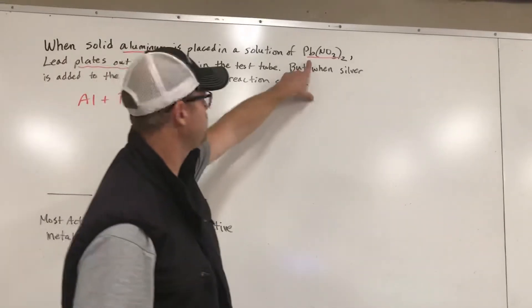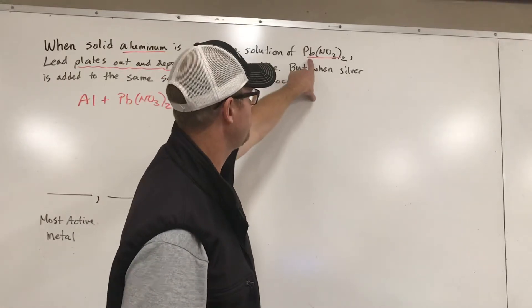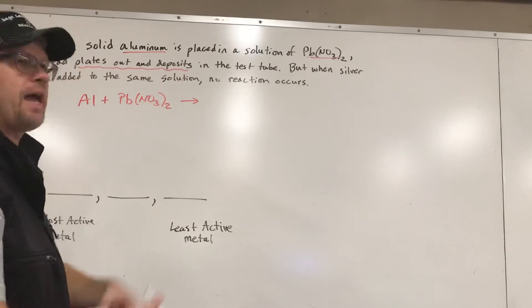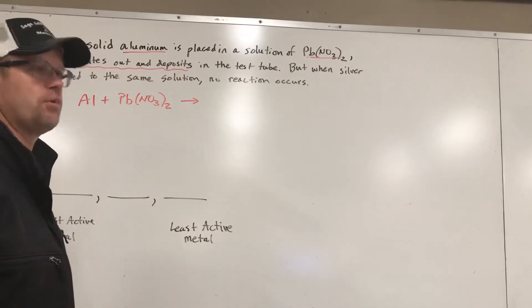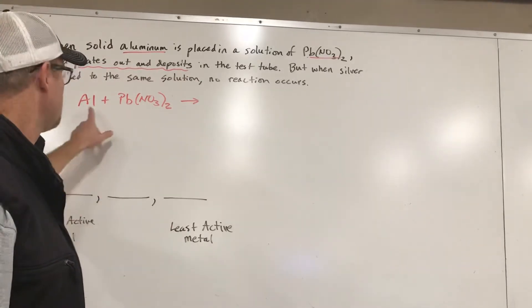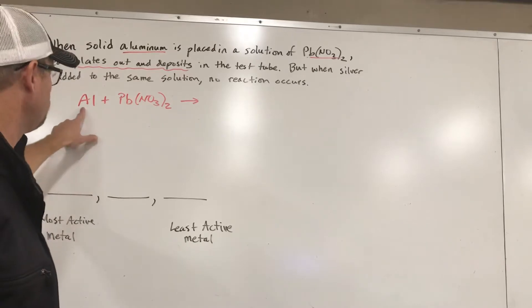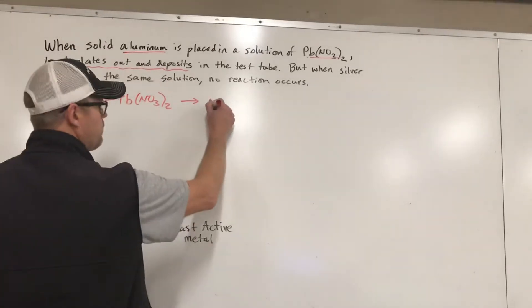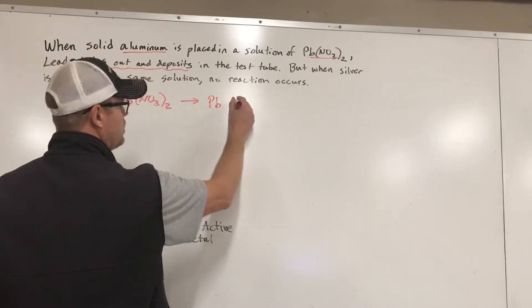What that means is pure lead all of a sudden shows up. We start out with lead dissolved as an ion in this solution. Then all of a sudden we put these together and we get solid lead coming out. Solid lead just shows up. What that means is a reaction must have occurred and aluminum went in and it kicked the lead back out and took its place.